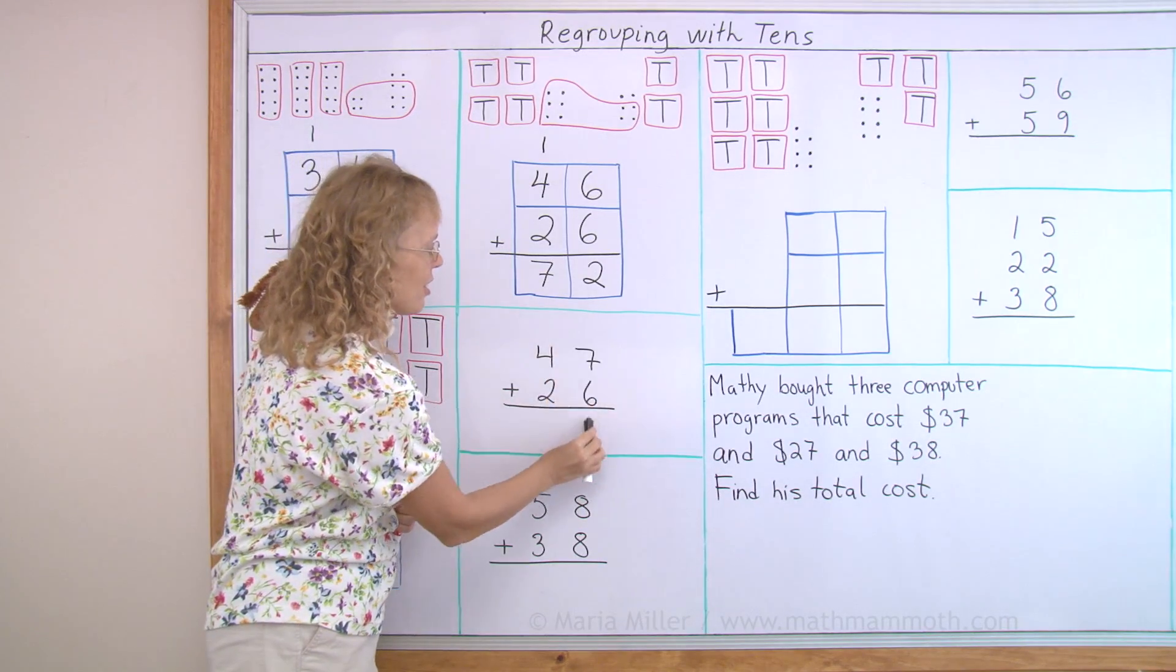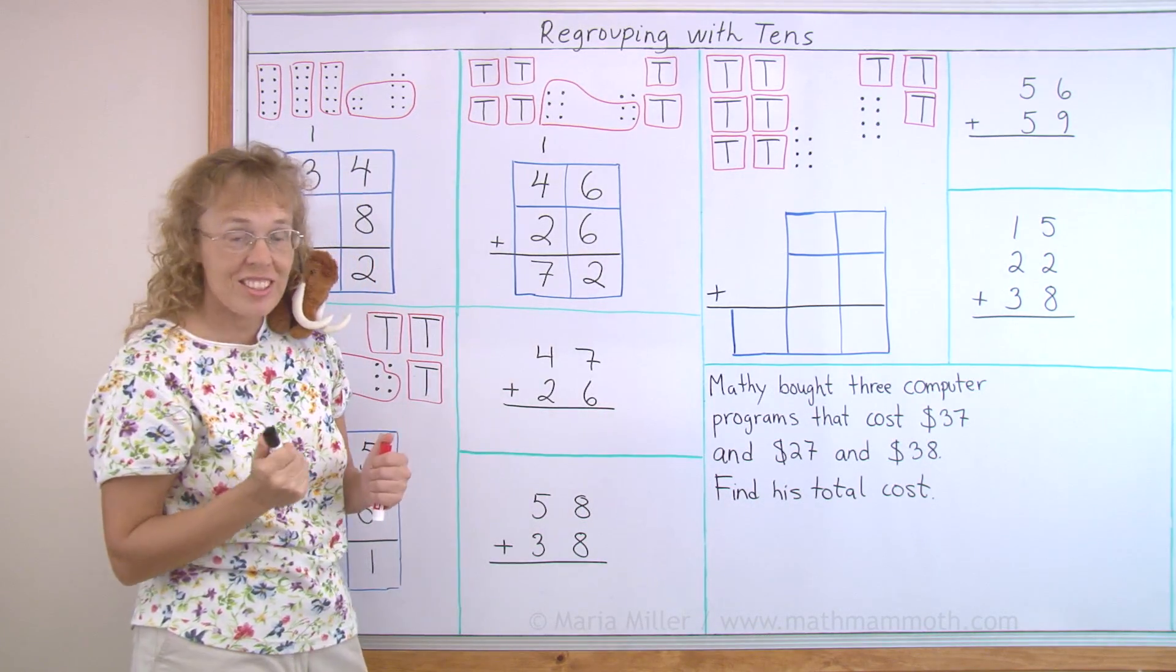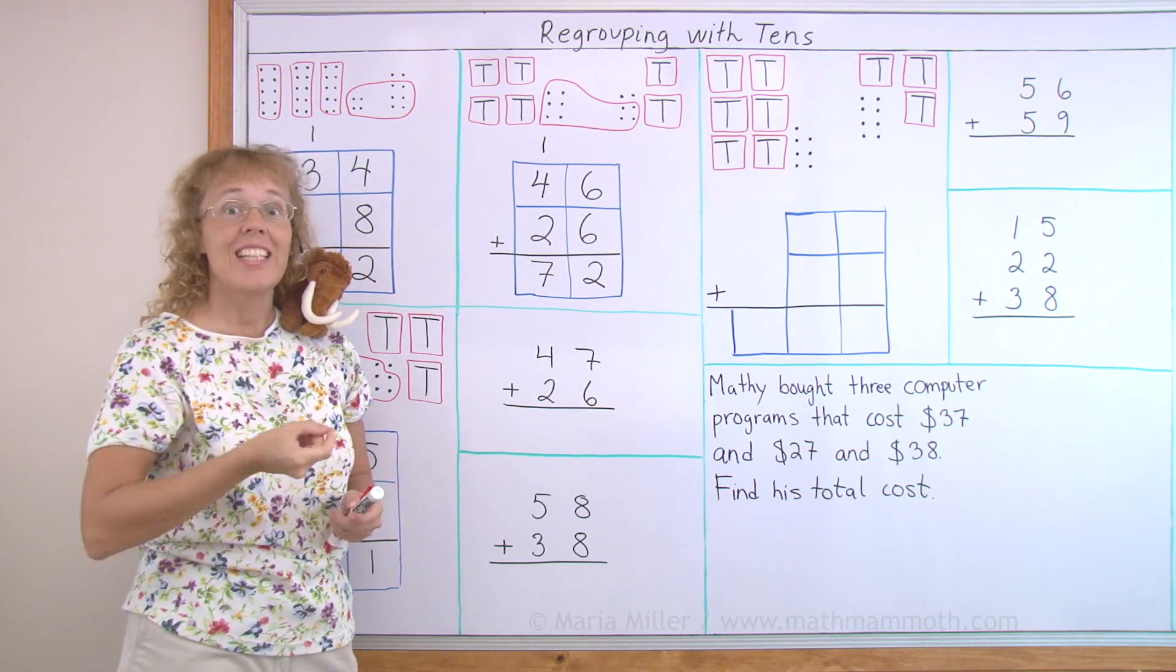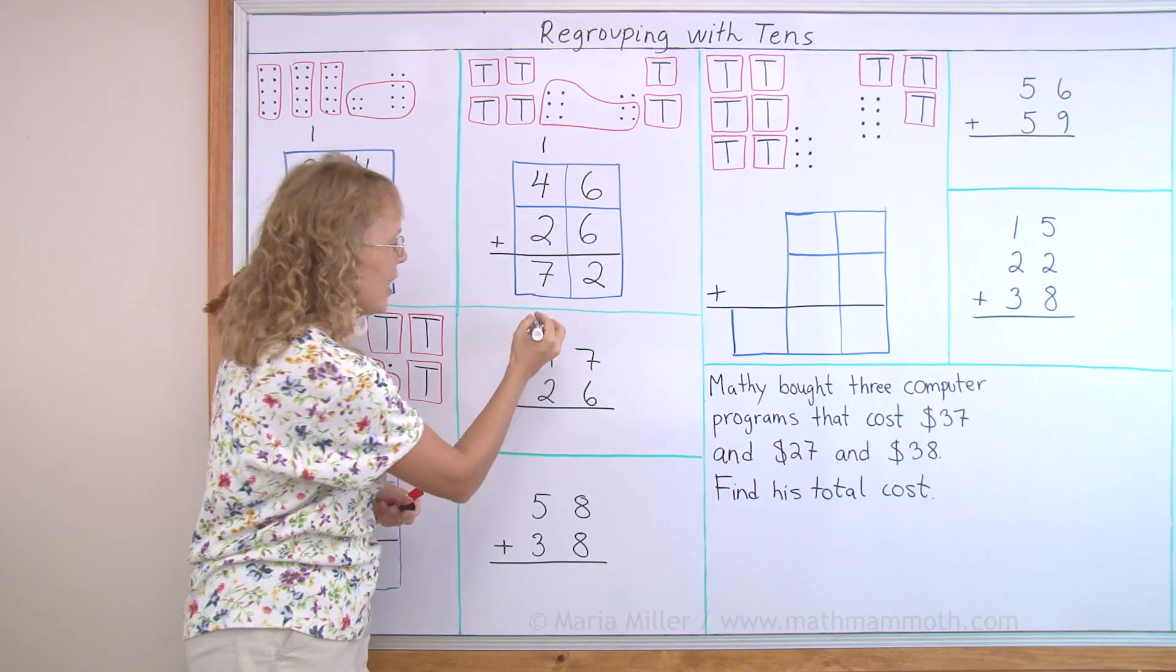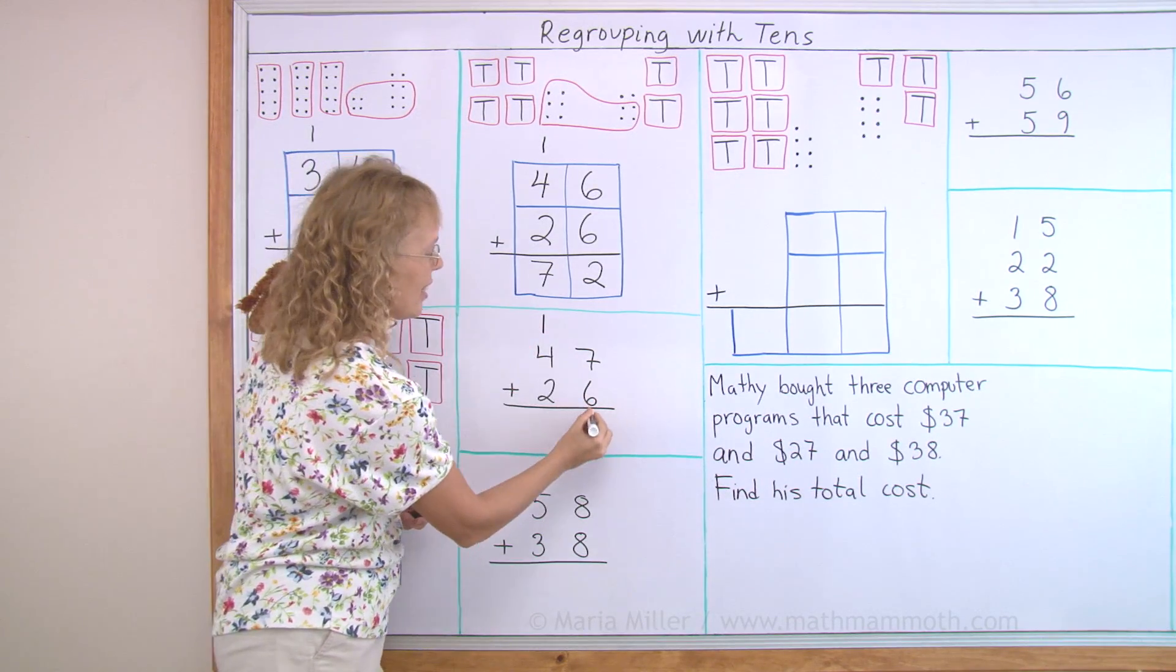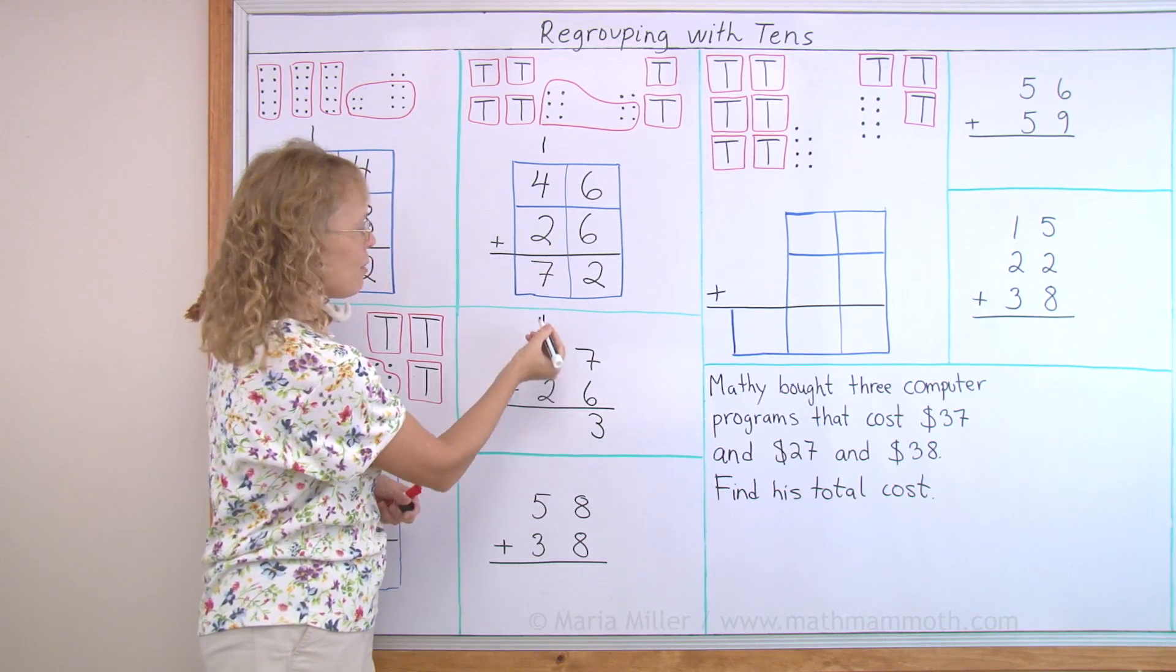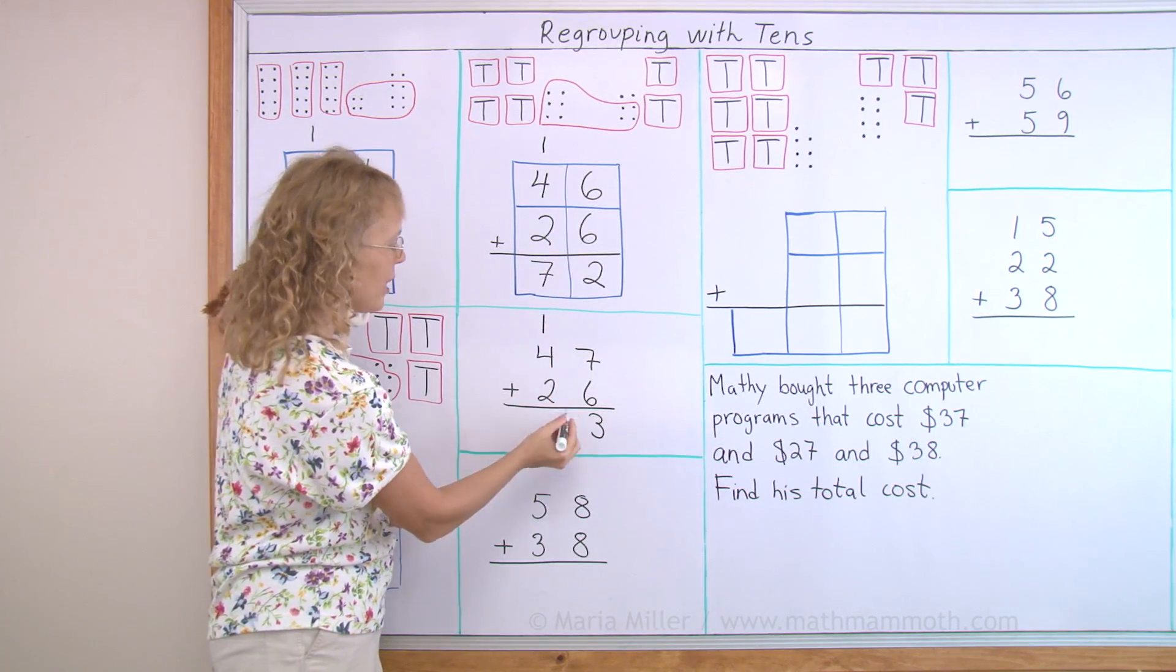You add here first the ones, the dots. Seven plus six. So that's thirteen. So that's ten and three. You write the ten over here, one ten, and three over here. And then you add all your tens. One and four and two makes seven tens.